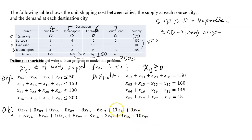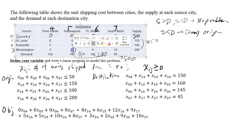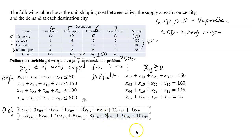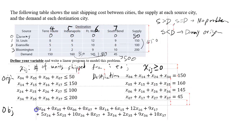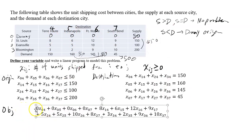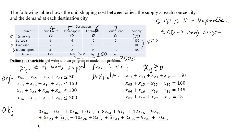Let's verify why this should be the objective function. For example, if you ship something from Bloomington to Indianapolis, that's X35, and it should have a coefficient of 2. So X35 has a coefficient of 2, and this objective function does represent the table. The goal is to minimize this function, so let's write down 'minimize' — the objective is to minimize this cost function.